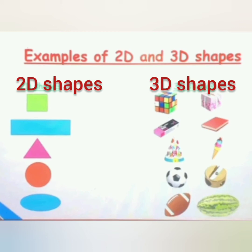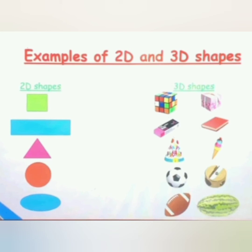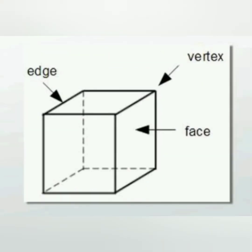So now you can see that all 3D shape objects are those that you can hold in your hand, but 2D shapes you cannot carry in your hand. Now let's understand edge, vertex, and face of any three-dimensional shape.